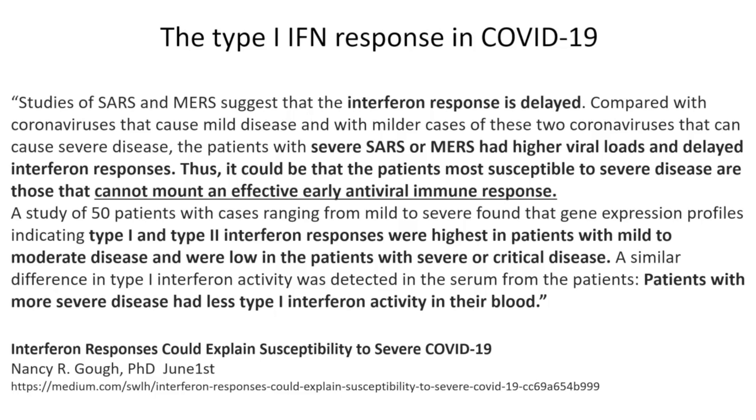Let's go on. Thus, it could be that patients most susceptible to severe disease are those that cannot mount an effective early antiviral immune response. A study of 50 patients with cases ranging from mild to severe found that gene expression profiles indicating type 1 and type 2 interferon responses were highest in patients with mild to moderate disease and were low in the patients with severe or critical disease. A similar difference in type 1 interferon activity was detected in the serum from the patients. Patients with more severe disease had less type 1 interferon activity in their blood. Now remember, type 1 interferon activity is the result of the innate immune system. So again, let's pull back. Let's think about this. Could it be that the reason why we're seeing more damage in the SARS-CoV-2 spike protein is that the innate immune system has been turned off early and is now coming on late while the virus has had a chance to get to the heart? Is that possible?